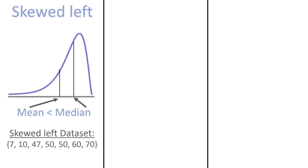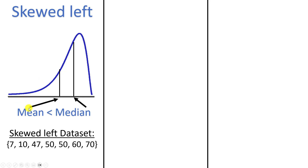We have one more thing to talk about, which is how the mean and median relate to each other in a skewed distribution. If we have a skewed left distribution — with most of the values towards the higher end and fewer values on the lower end — this is almost like having a few outliers on the low end. We already know that outliers drag the mean in the direction of the outliers but don't really affect the median. So in a skewed left distribution, your mean is going to be smaller than your median.